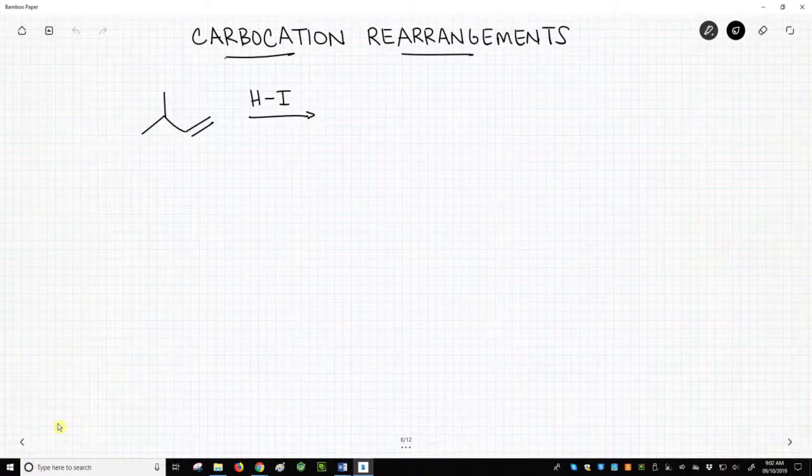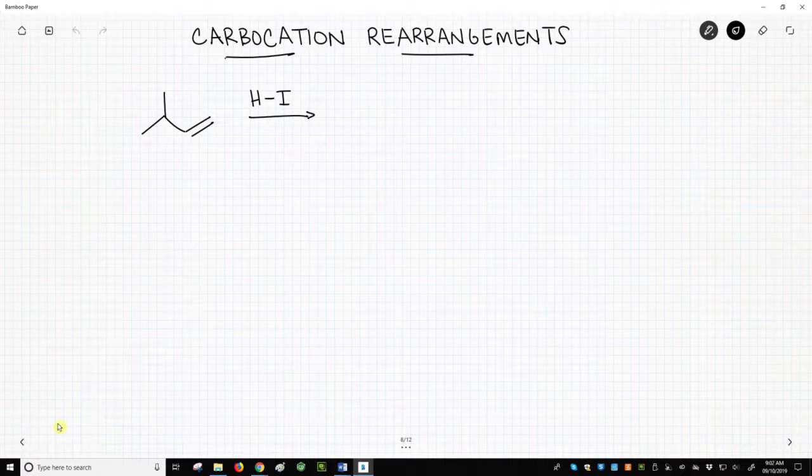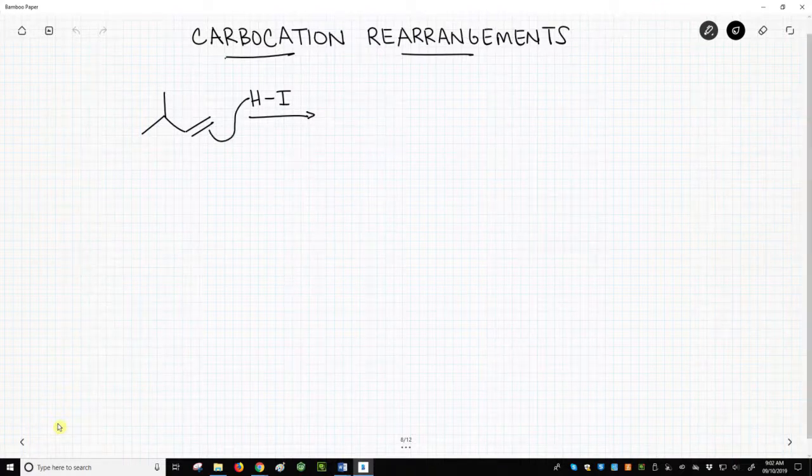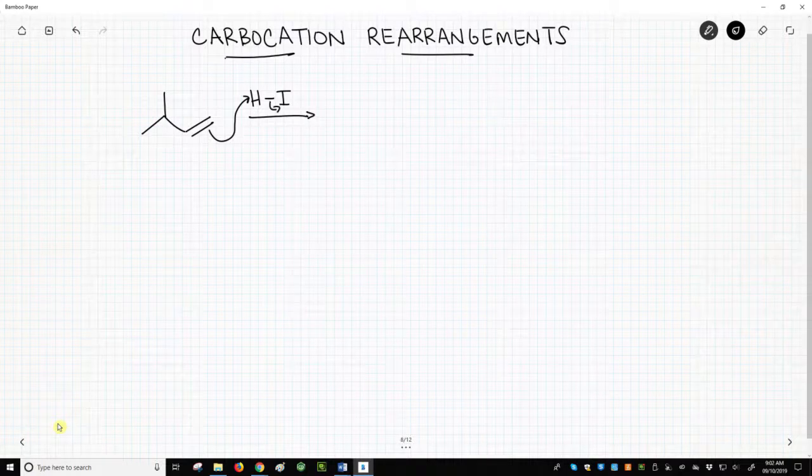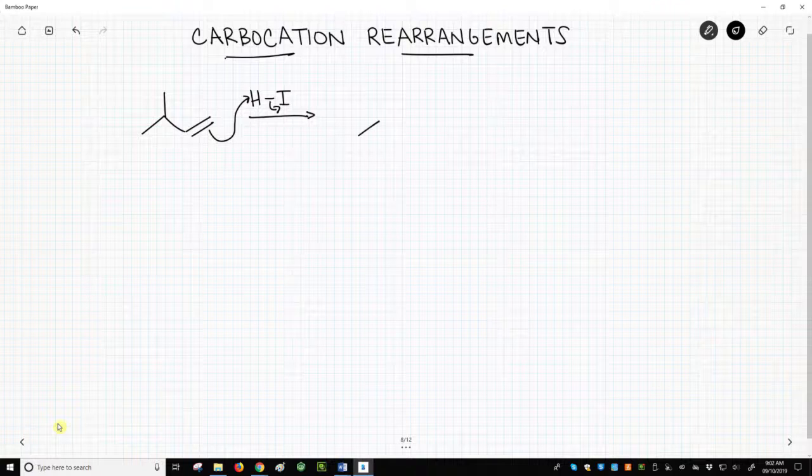On the screen, we have an alkene, and it's reacting with HI. For our hydrohalogenation, we'll protonate the alkene so that we get the more stable secondary carbocation, and that's where our hydrogen went.